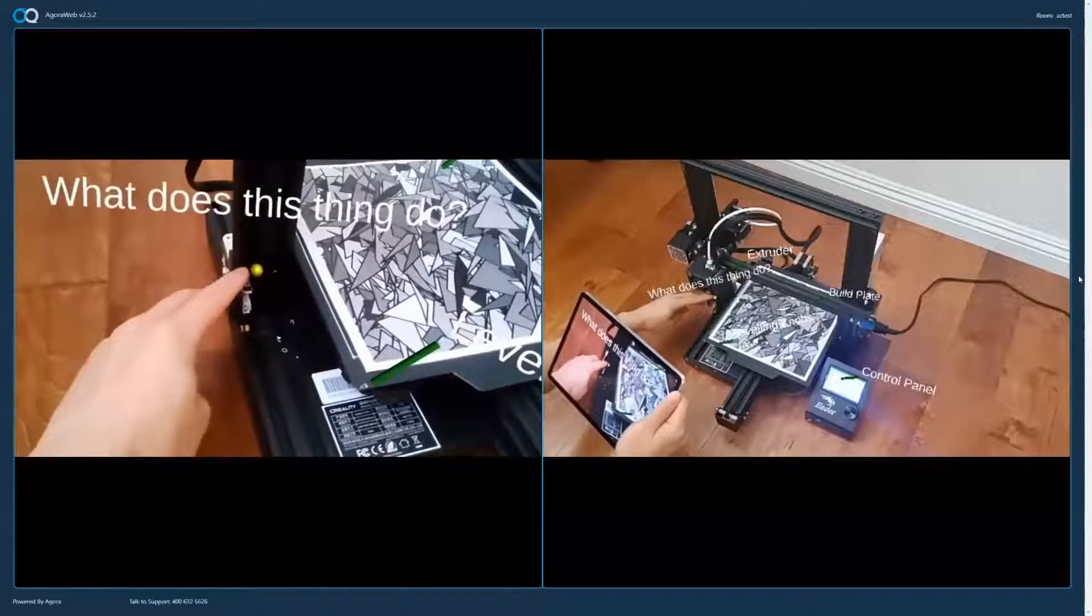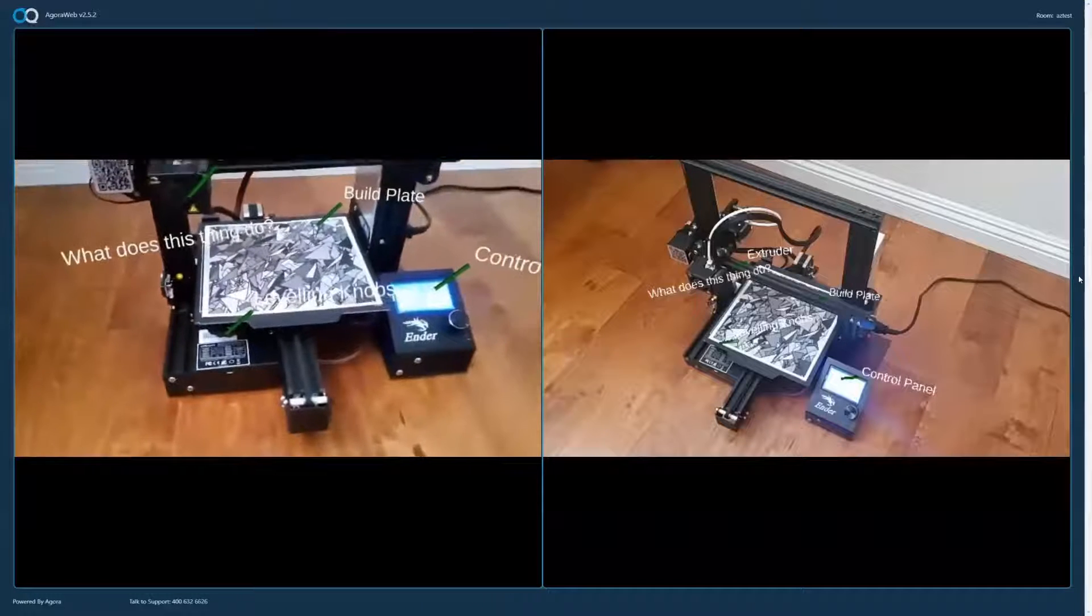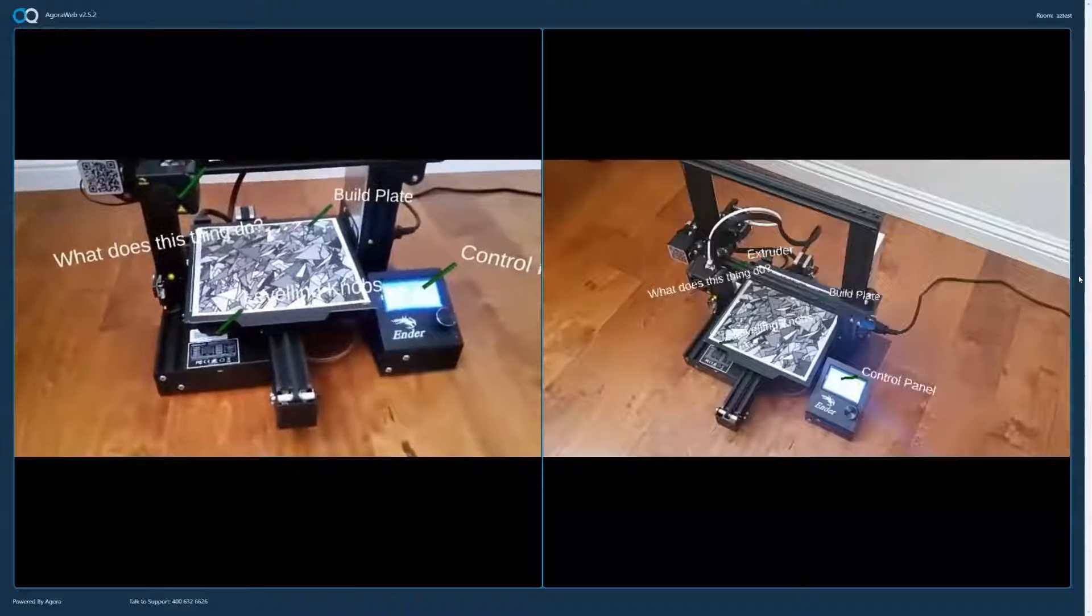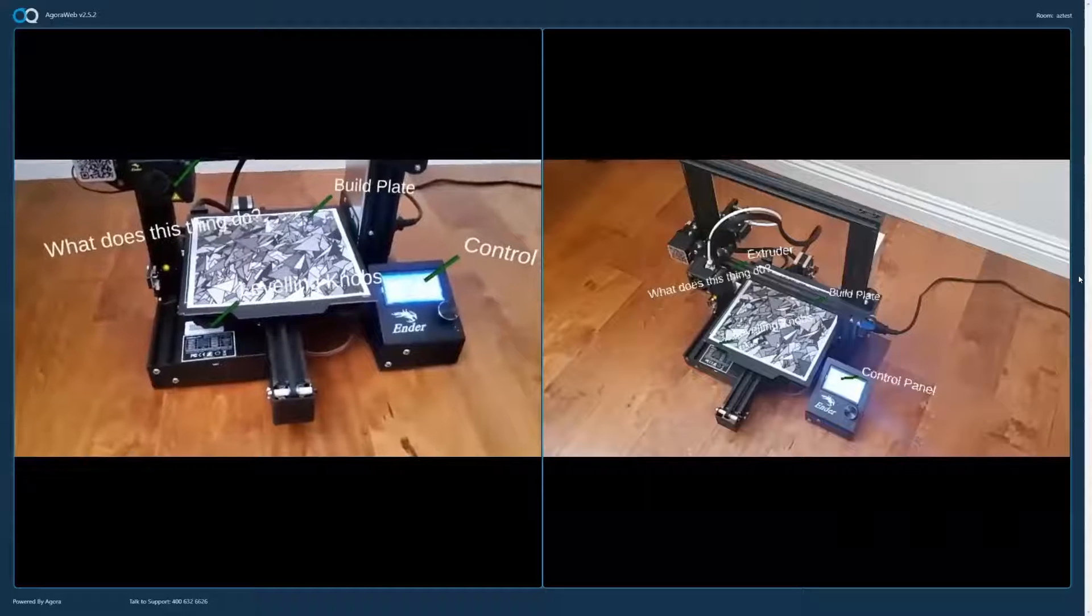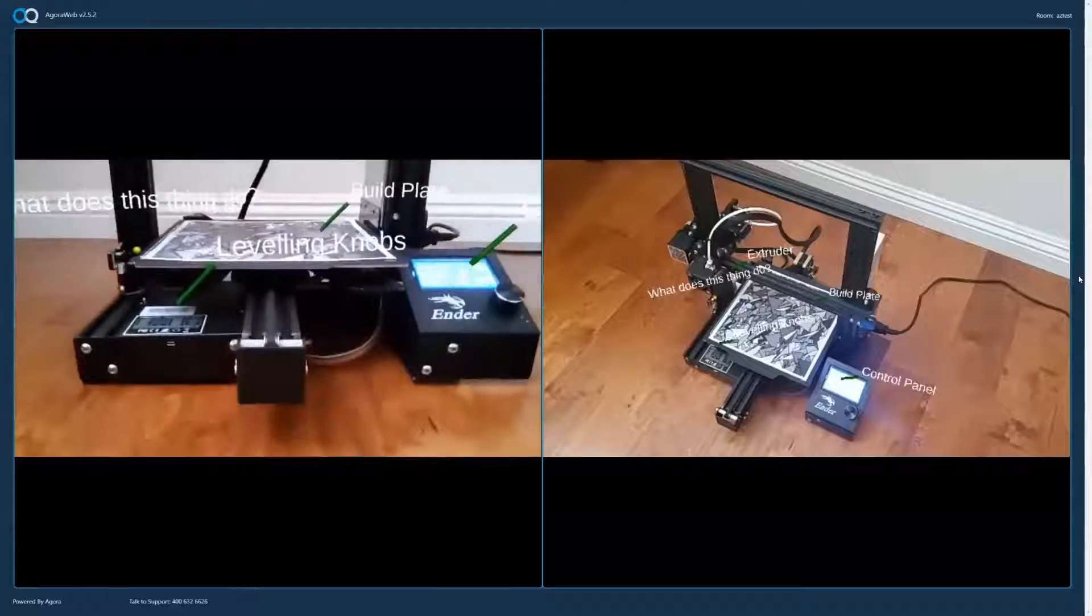So this thing over here is a limit switch for the Z axis. It has an actuator that gets triggered when the extruder moves all the way to the bottom. And this prevents the hot end or extruder from breaking the build plate by moving too far down.